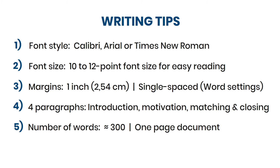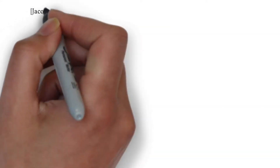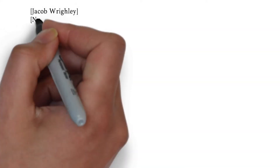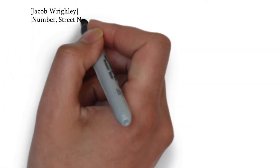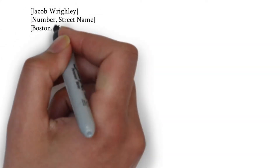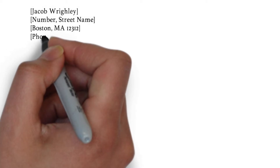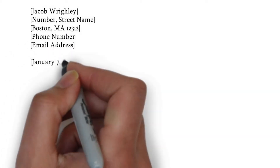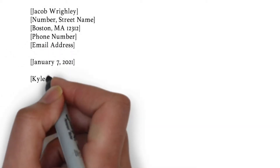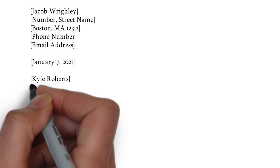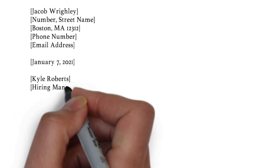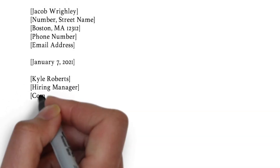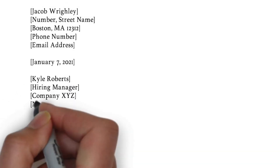Now I want to start writing the example letter. The first thing you need to do is list your contact information on the left side. In between two white spaces underneath, we put the date and then the hiring manager's name and job title, followed by the company's information.